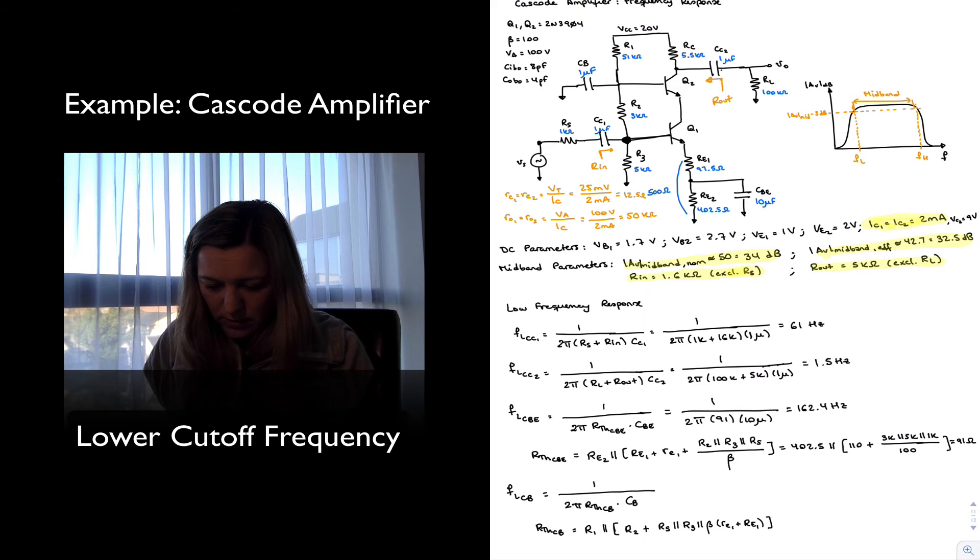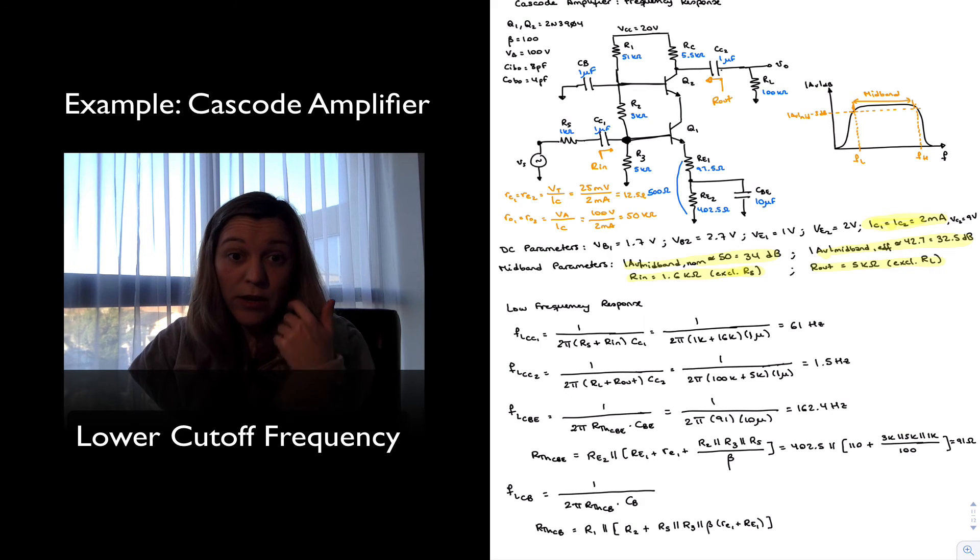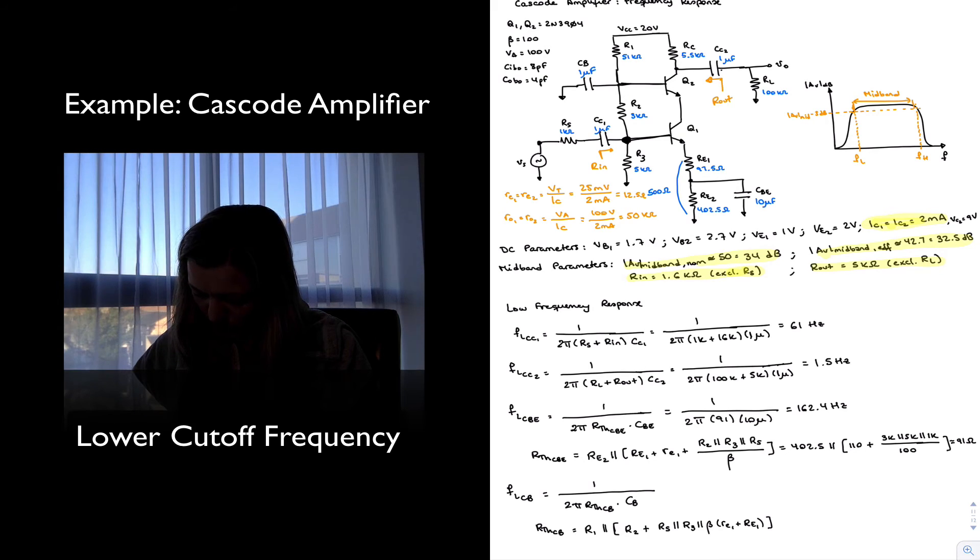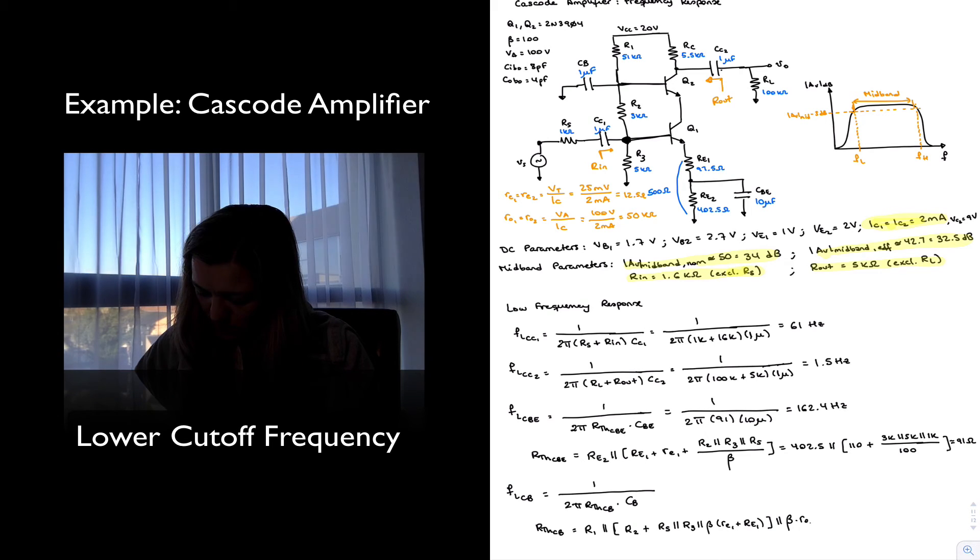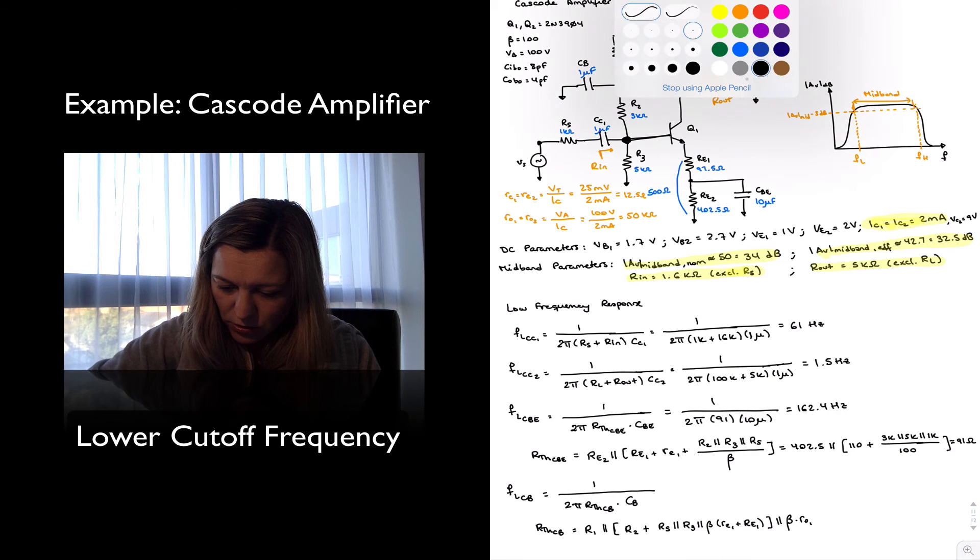And then all this in parallel with the resistance in the base of Q2, which is going to be something rather large because it's going to be β times little re2 in series with capital RE2. And so we're going to ignore that component just because it's going to be rather large. So this is approximately equal to β times little re1. So I'm ignoring this because it's large.